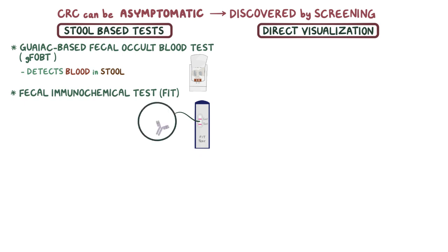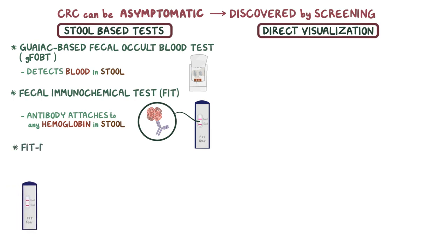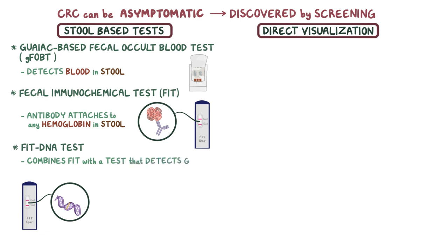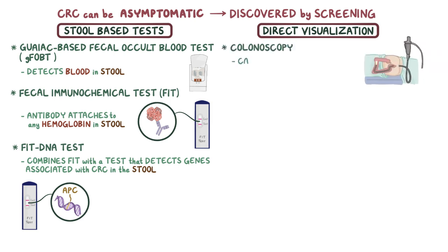Instead of GUIAC, FIT uses an antibody that attaches to any hemoglobin present in the stool. Finally, there's the FIT DNA test, which combines FIT with a test that detects genes associated with colorectal cancer in the stool, such as mutations in the adenomatous polyposis coli gene, or APC gene. One direct visualization test is a colonoscopy, which is when a camera is inserted retrograde into the colon and rectum using a flexible tube, and biopsies are taken.